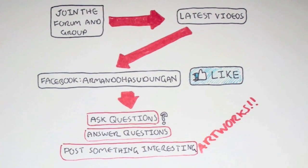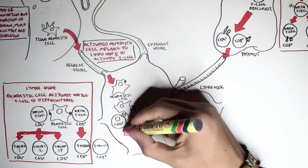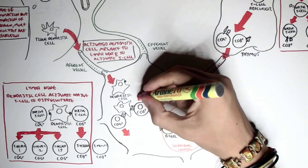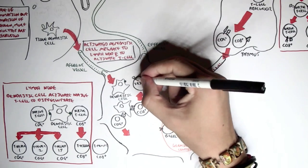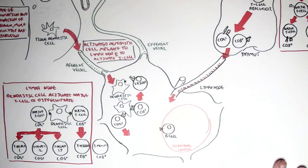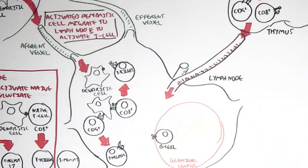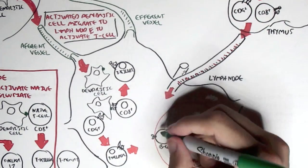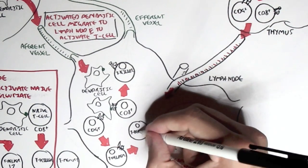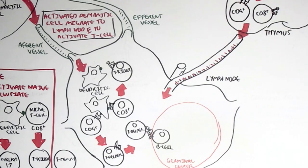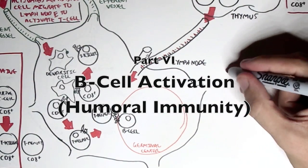In the previous video we looked at the activation of the naive T cells, such as the naive CD8 cell becoming a T killer cell, and the naive CD4 cell becoming different types of T helper cells. T helper cells have another important role in that they also activate B cells within the germinal center — the B cells which have already recognized the antigen.